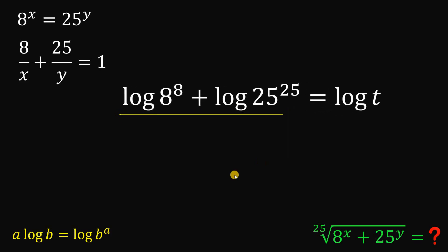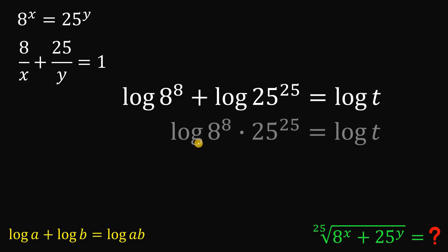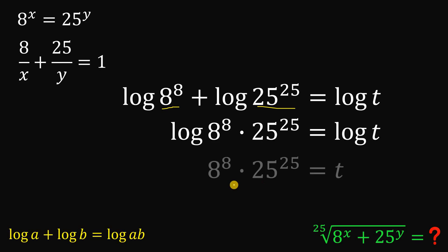Using laws of logarithm again — when we have logarithm of a plus logarithm of b, we can rewrite this as logarithm of a times b — so the left-hand side becomes logarithm of 8 raised to 8 times 25 raised to 25. Now solving for t, we get t equals 8 raised to 8 times 25 raised to the power of 25.